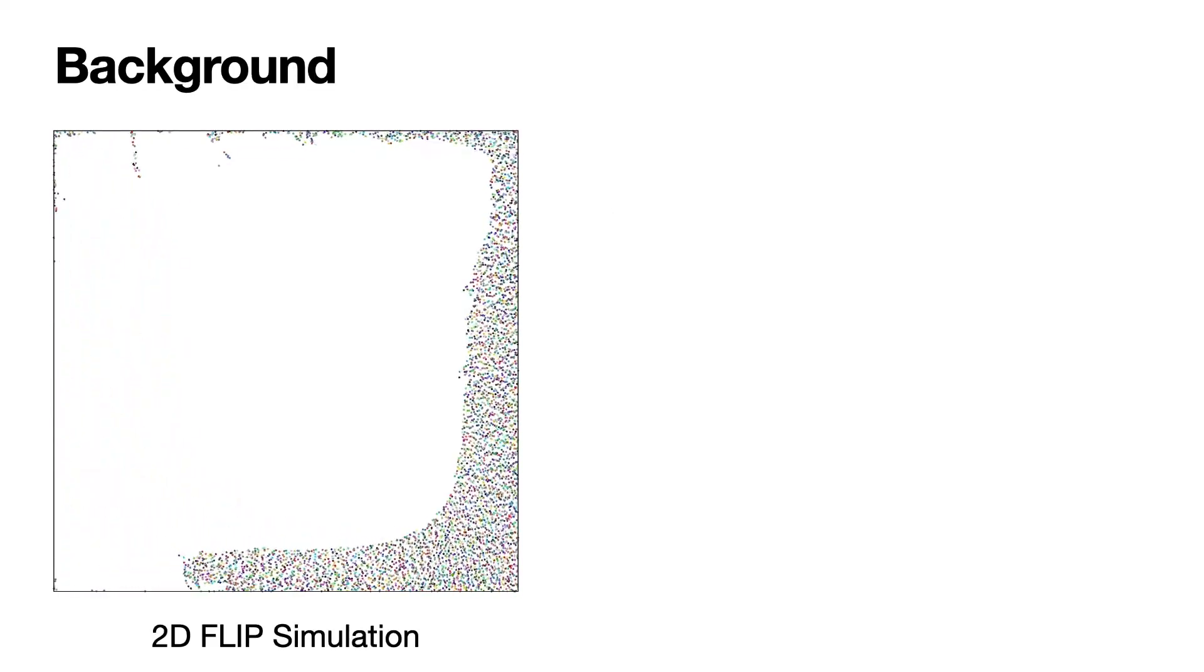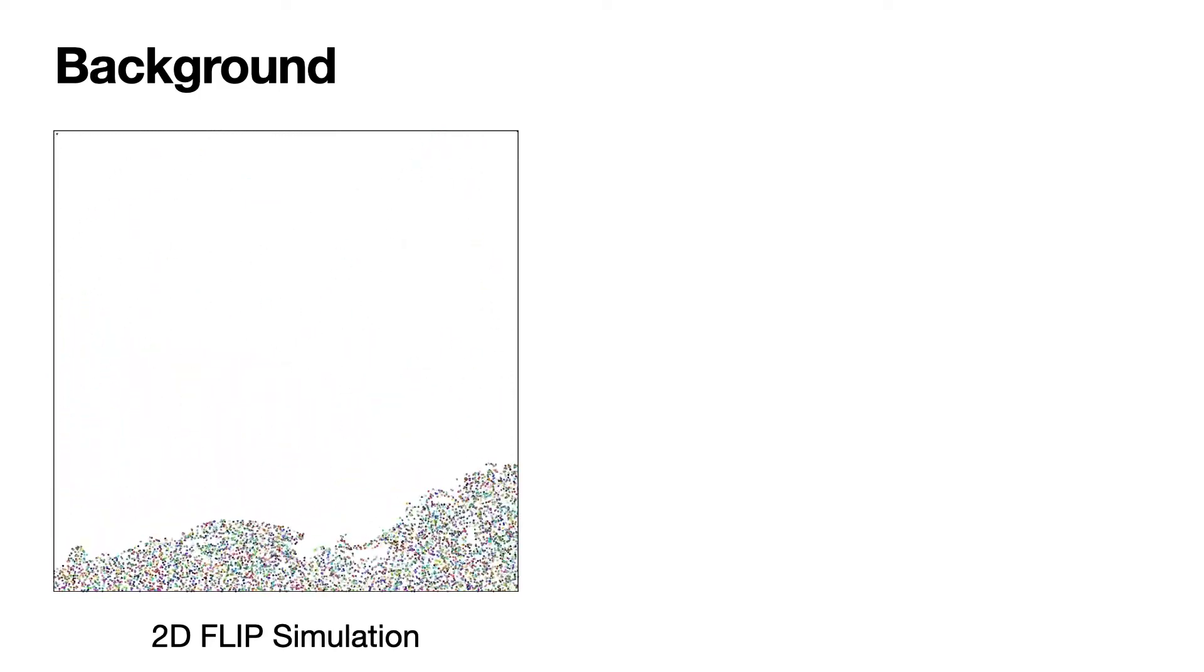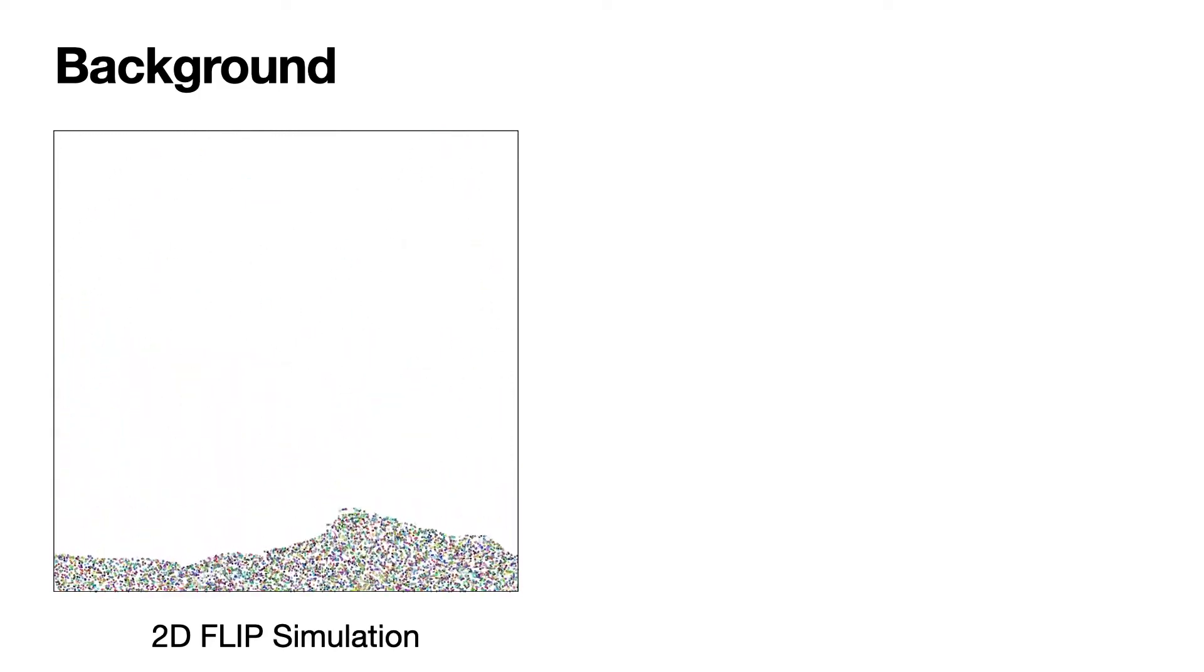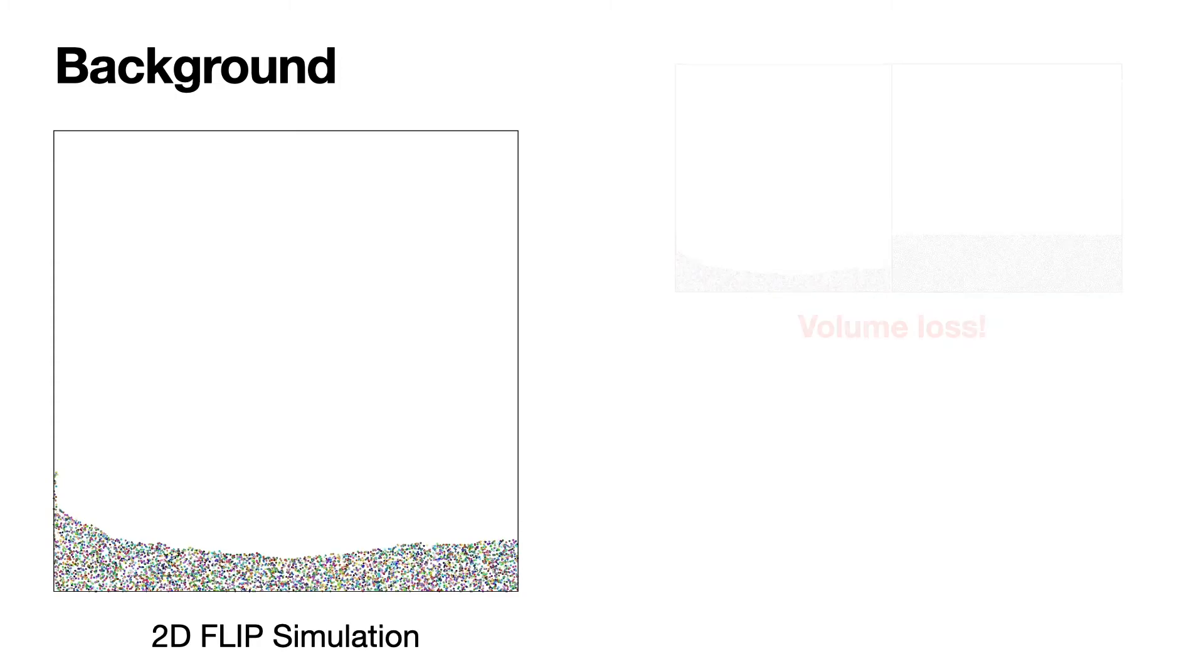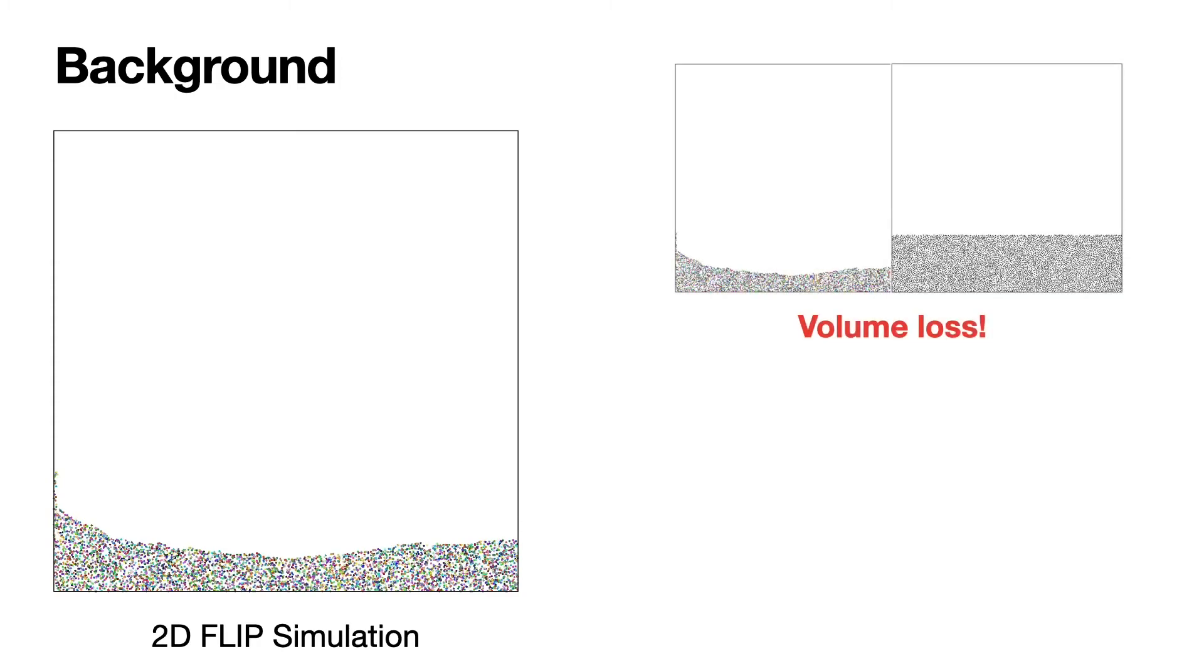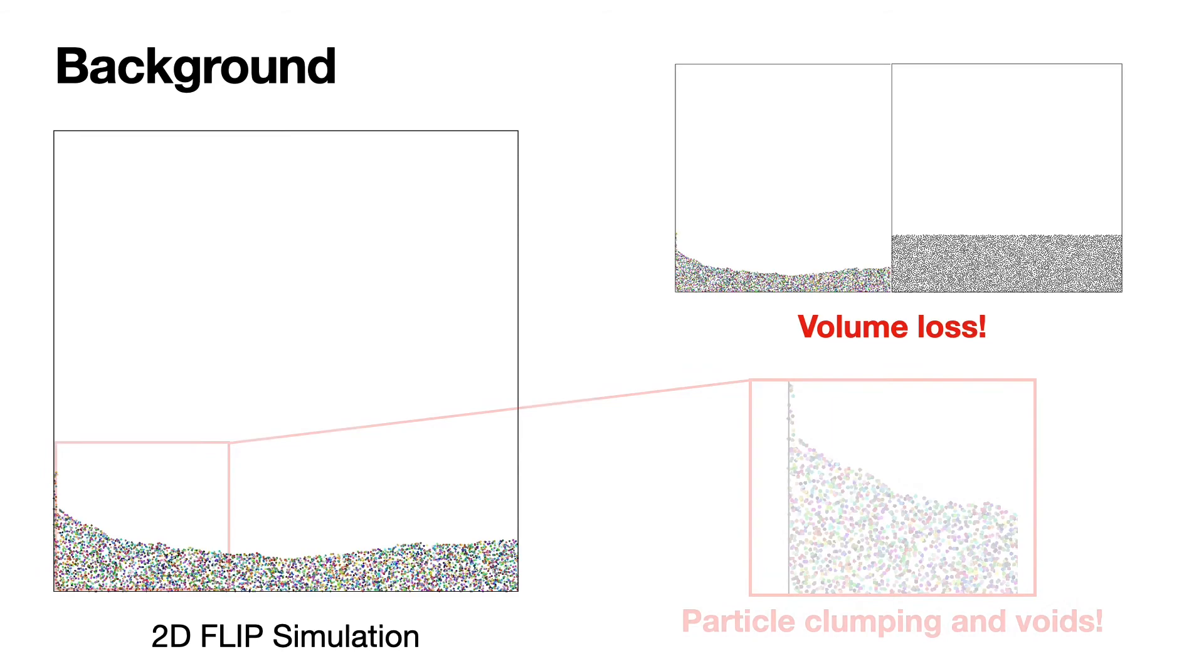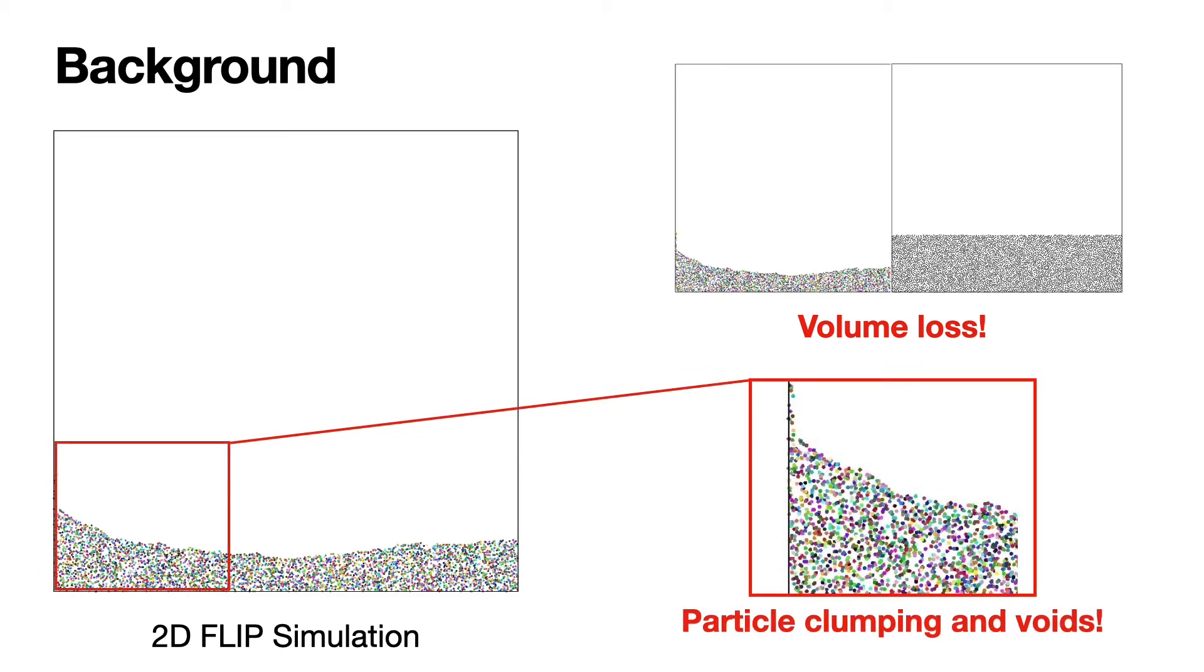Traditional hybrid fluid solvers suffer from non-uniform particle distribution and volume error. As we can see here, FLIP lost almost half of its volume. Artificial particle clumping and voids also appear.